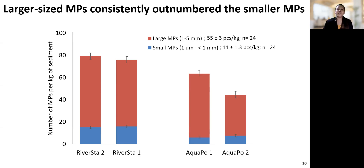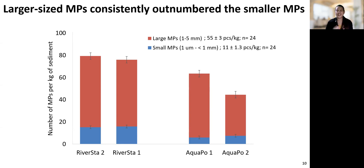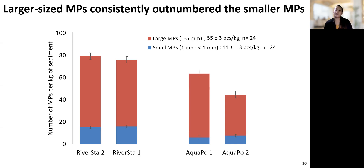Several studies have pointed out that physical abrasion, biological activities, and chemical processes in the environment enhance physical and chemical degradation of plastics and can shift the particle size distribution as time passes. It is important to remember that the size of MPs poses a potential threat to aquatic organisms that ingest them, and there is an inverse relationship between MP size and bioavailability. Further, due to the greater surface area of MPs, whether small or large, the adsorption of pollutants is possible.